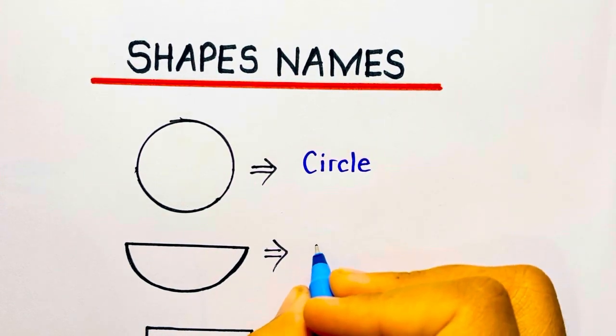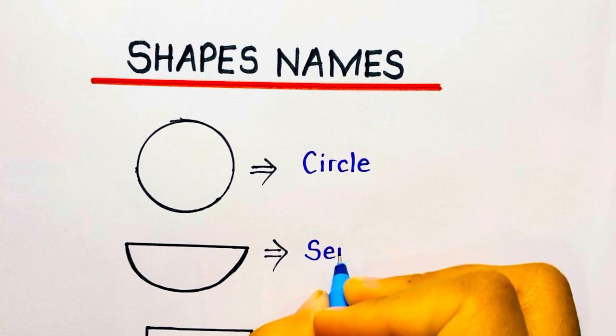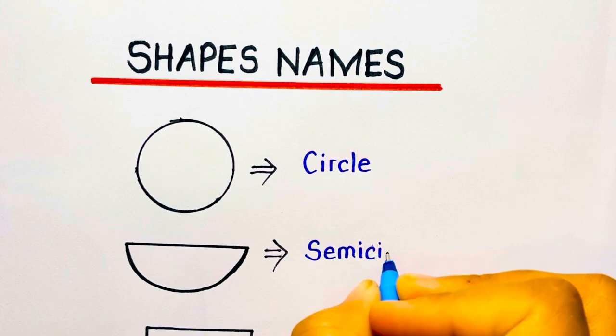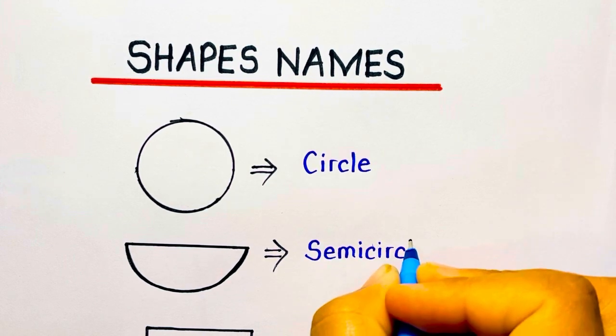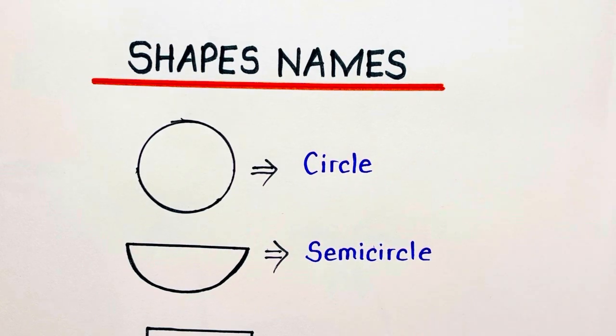The name of the second shape is semi-circle. S-E-M-I-C-I-R-C-L-E. Semi-circle.